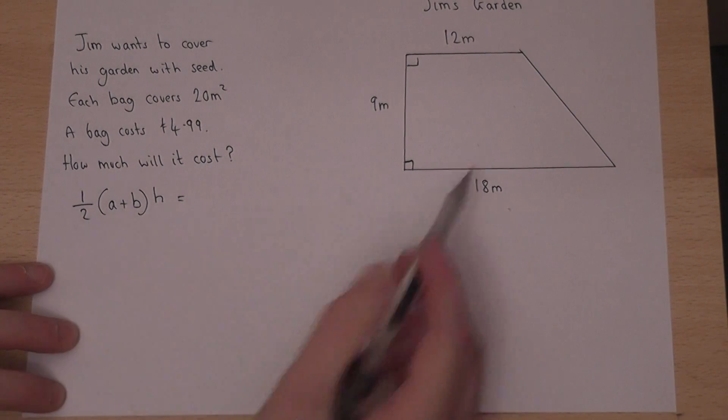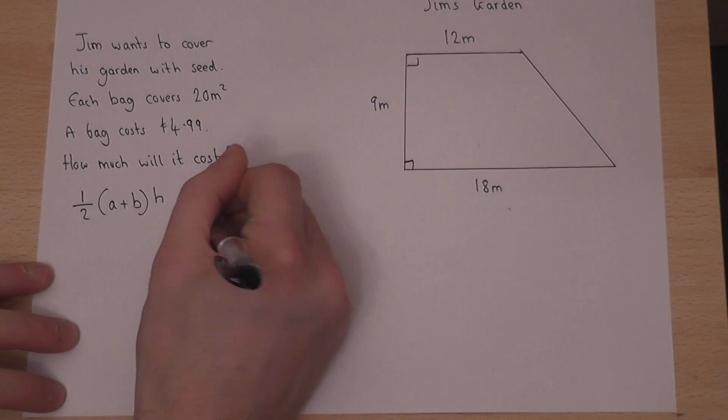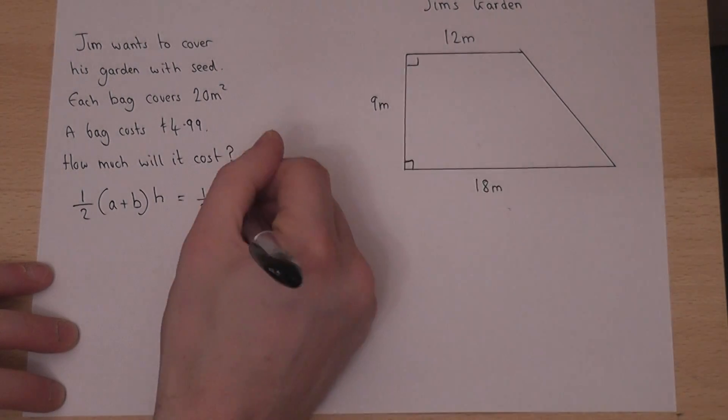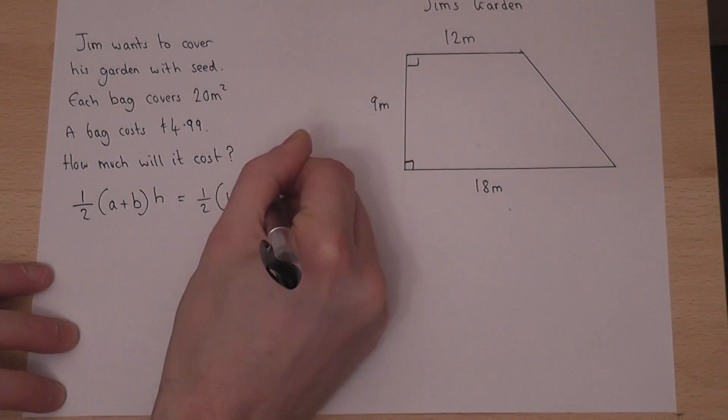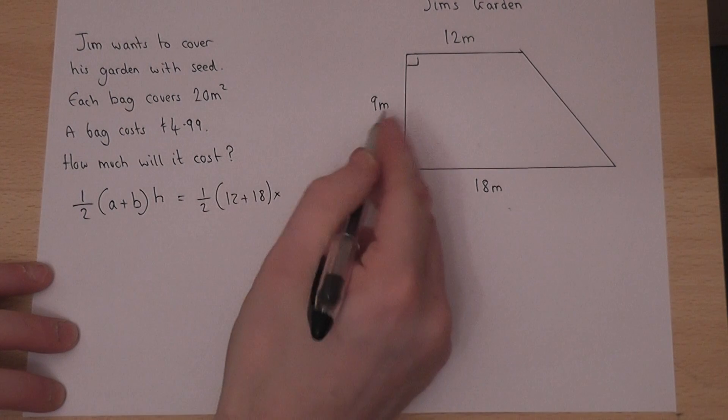Now a and b are the two parallel sides, so it's a half of a plus b times by the height, which is 9.